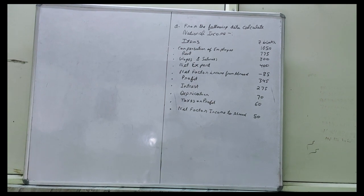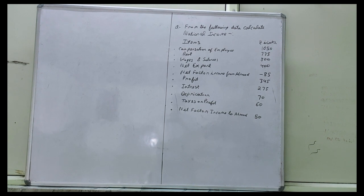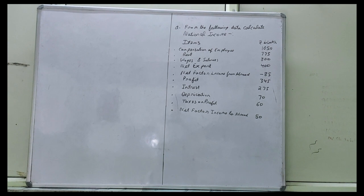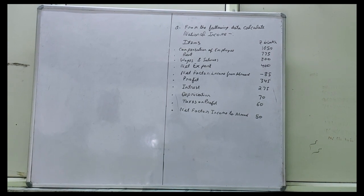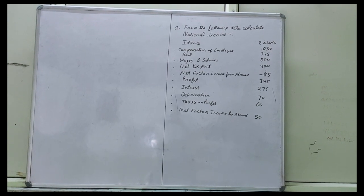Students, this will be the question for solving: from the following data, calculate national income. The items given are: compensation of employees 1050, rent 775, wages and salary 800, net export 400, net factor income from abroad minus 85.